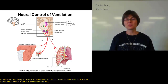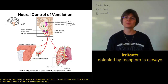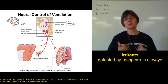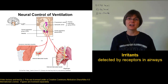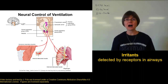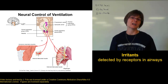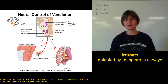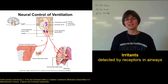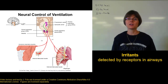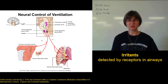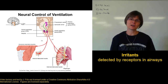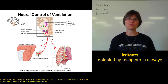A third condition that can affect breathing is the presence of irritants in the airways. Irritant receptors in the trachea and in the bronchi detect the presence of irritants — things like smoke, pollen, pollution, or dust getting down into the respiratory passages. These irritant receptors send a signal up to the dorsal respiratory group saying we've got a lot of irritants coming into the lungs and we need to fix this.